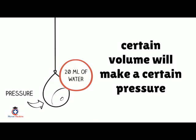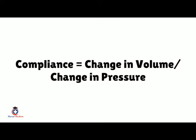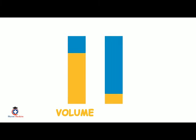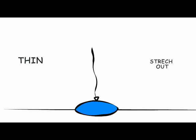Imagine a balloon filled with 20 milliliters of water — a certain volume creates a certain pressure inside. The formula to remember is: compliance equals change in volume over change in pressure. This balloon has a certain compliance — it's thin and able to stretch out.